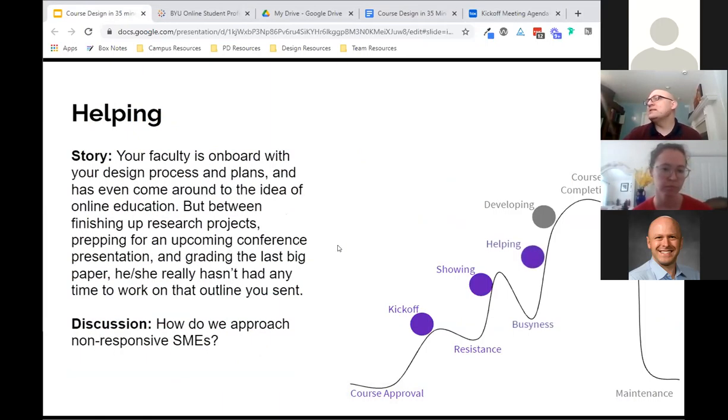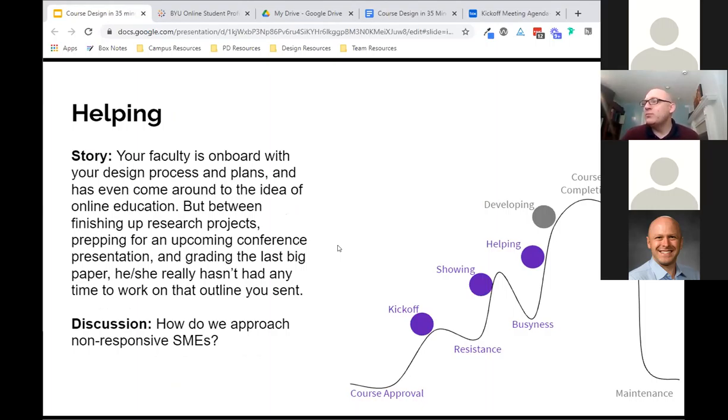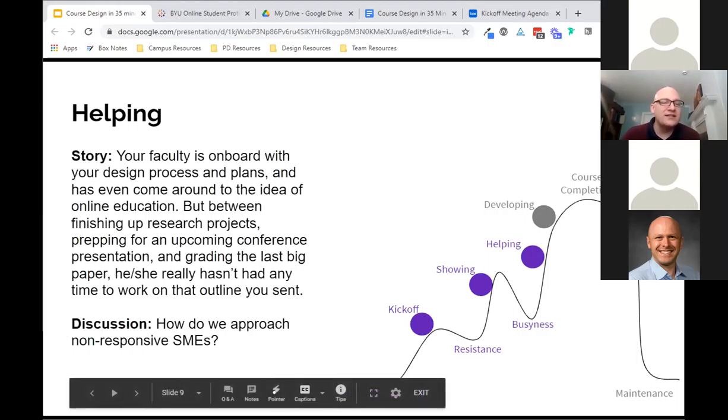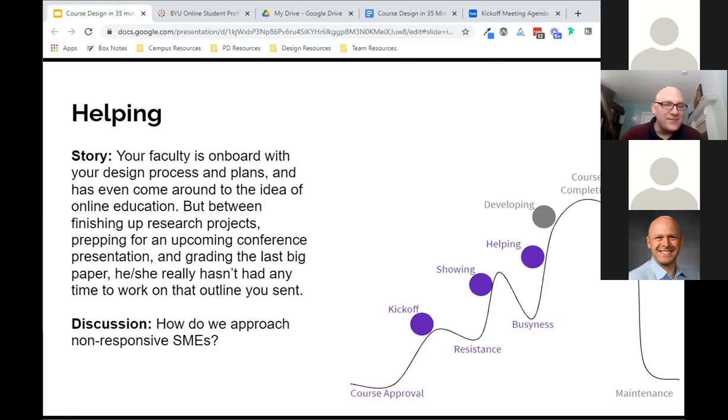All right. So then, let's say that you've got your faculty on board now, but they are just busy, right? So they've got research projects. They're preparing for an upcoming conference and they're grading a big paper. And so they just don't have a lot of time and they didn't meet that first milestone that you had set up in the kickoff meeting for getting their outline done. So we're not going to break out on this one, but I just want to ask, kind of pose this question, how do you think you would respond to that situation? What would be some good strategies for approaching a non-responsive subject matter expert? I know this probably only happens ever at BYU online. But what would you do? How would you approach that situation?